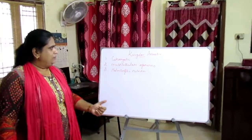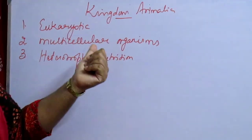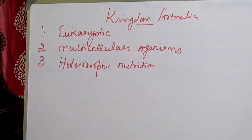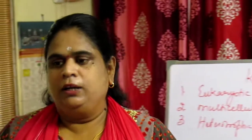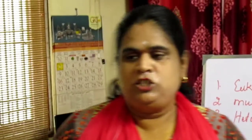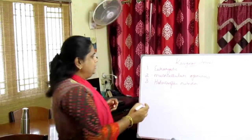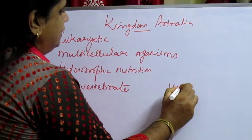The three main characteristic features of Kingdom Animalia are: first, eukaryotic — they have a well-developed nucleus; second, multicellular organisms; and third, heterotrophic nutrition. They include about 35 phyla of which 11 are considered as major phyla. Almost 99% of animals are invertebrates — animals without a backbone. They are categorized into two types: invertebrates and vertebrates.